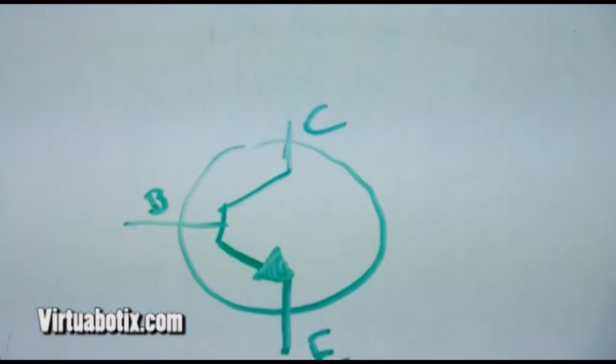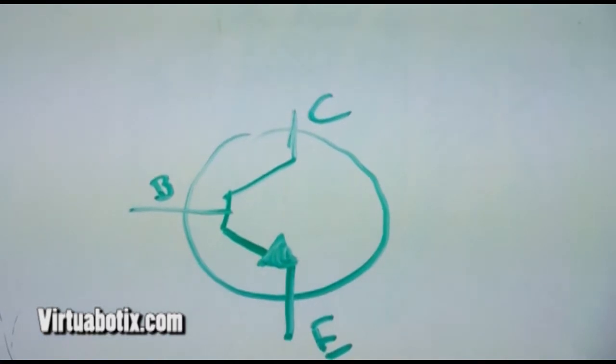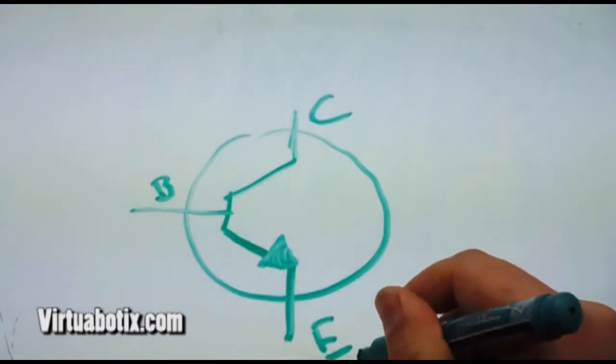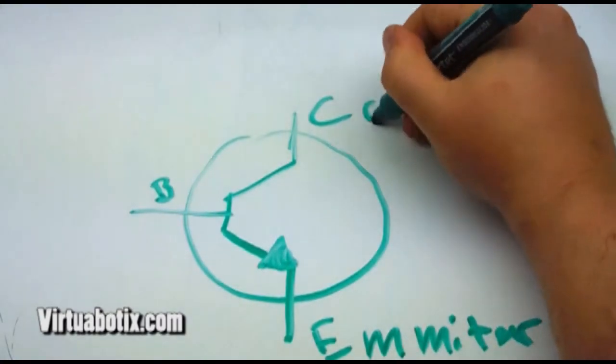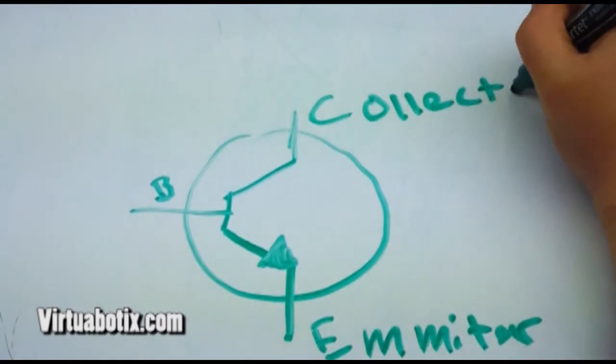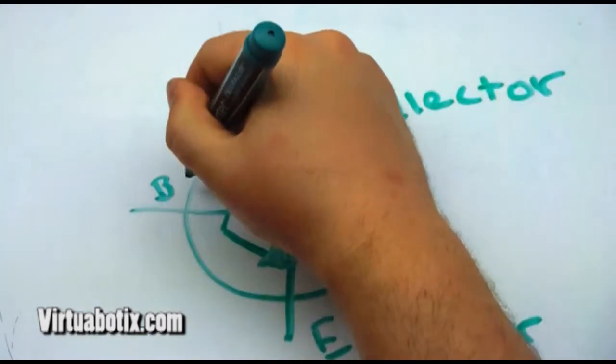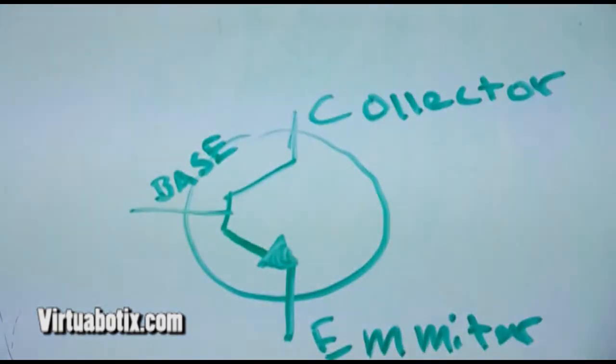And this is the schematic symbol for it. That right there is the emitter, collector, and the mighty and glorious base.